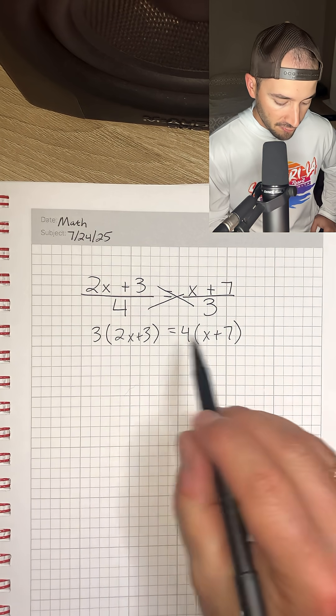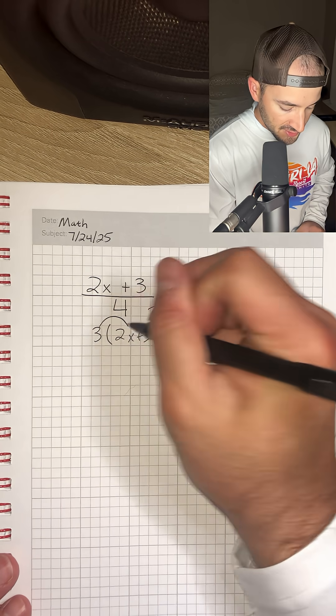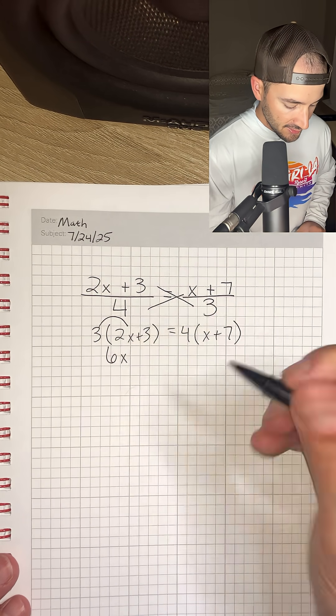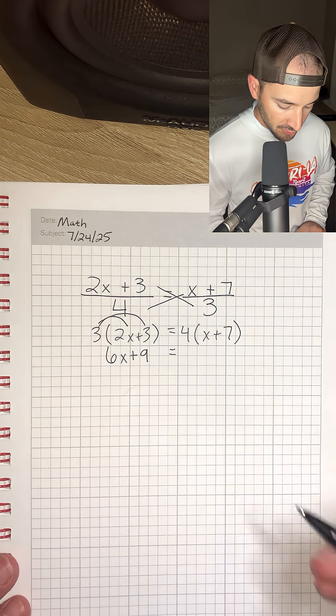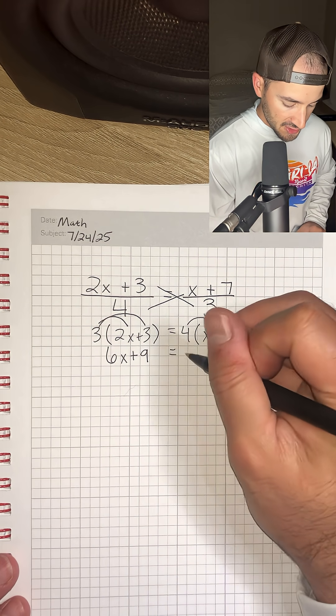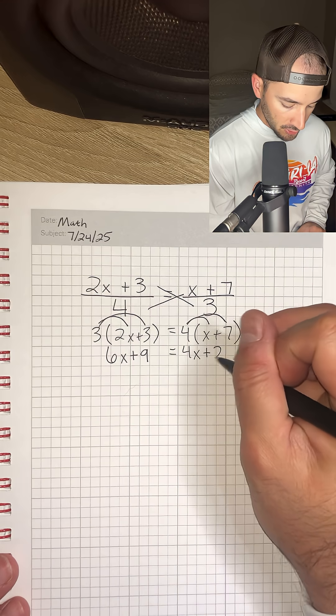Now we can distribute the 3 and the 4 to both terms inside the parentheses. So 3 times 2x is 6x, and 3 times 3 is plus 9. That's going to be equal to 4 times x, which is 4x, and 4 times 7, which is plus 28.